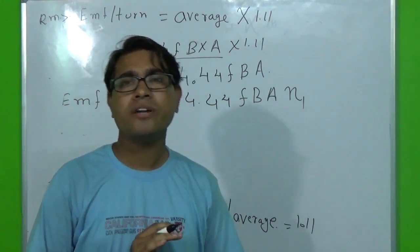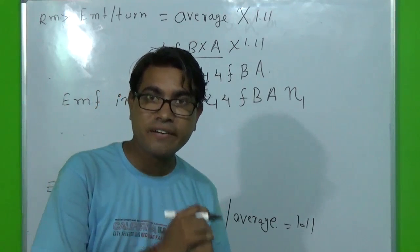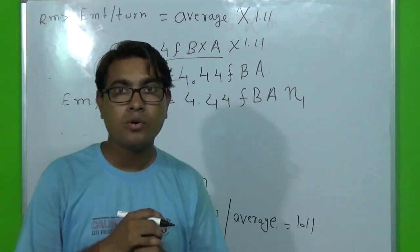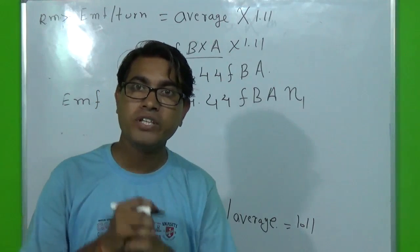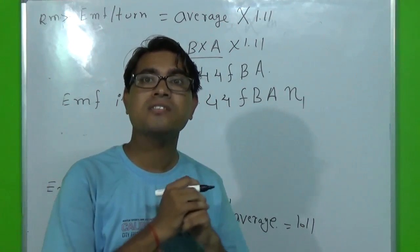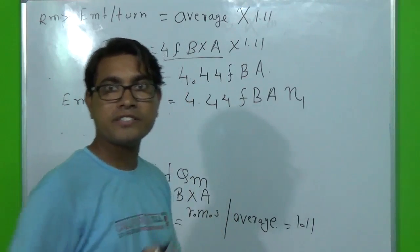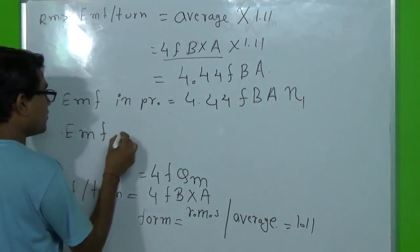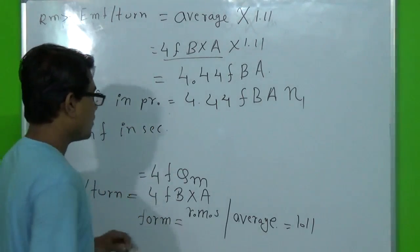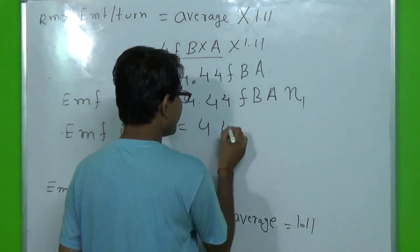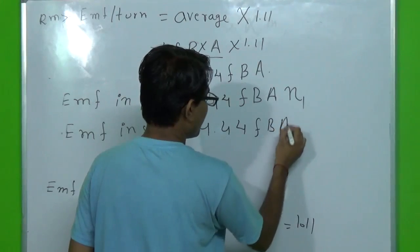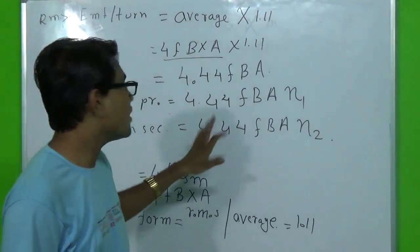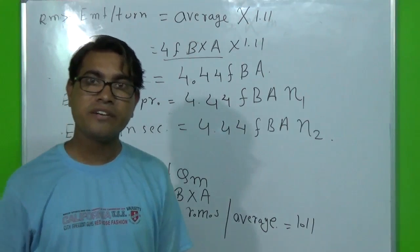To calculate the EMF generated in the secondary, we multiply the RMS EMF per turn by the number of turns in the secondary, N2. So the EMF in the secondary equals 4.44·F·B·A·N2. These two are the EMF equations for the primary and secondary of a transformer.